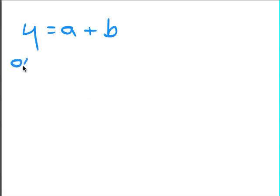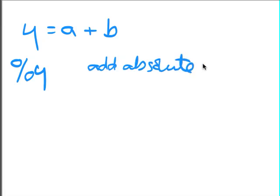Now, if you want to know the percentage uncertainty in Y, instead of adding the percentage in A and B, it gets a bit more difficult. What you have to do is you have to add together the absolute uncertainties.